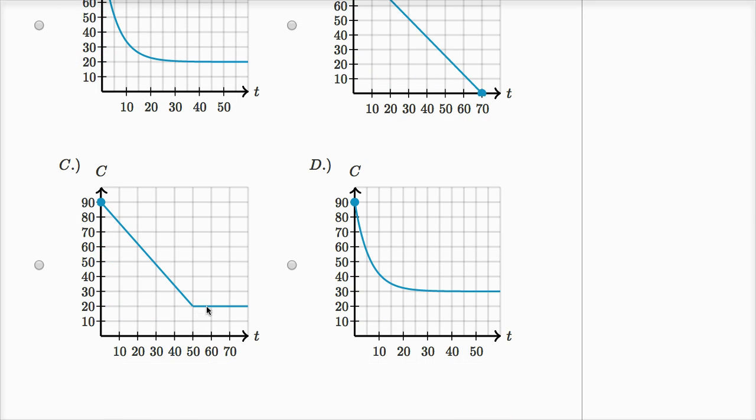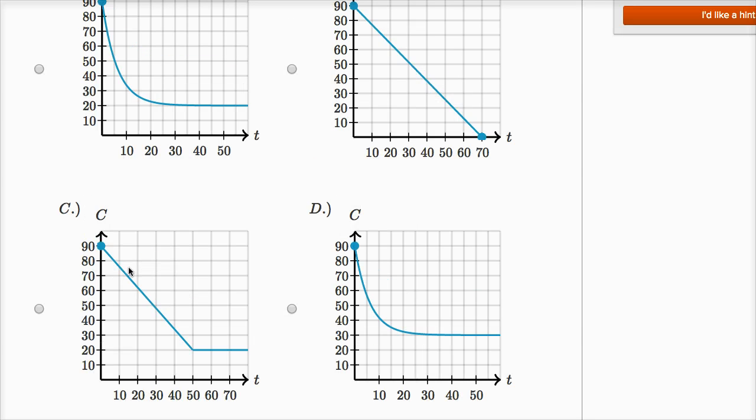C, it does get us to this end state that stays at 20 degrees, but it doesn't look like an exponential model. It looks like it's linearly decreasing, and then it stops linearly decreasing after 50 minutes, and then it just stays constant at that temperature of 20 degrees. So even though it gets us to the right place, it does not look like an exponential decay. So I would rule choice C out as well. So A is looking good.